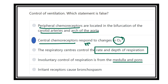Involuntary control of respiration from the medulla and pons is also true, because we take inspiration and expiration through our subconscious mind — we are not aware of it — and it is controlled by the medulla and pons. Irritant receptors causing bronchospasm is also true, as different irritant substances can cause bronchoconstriction.